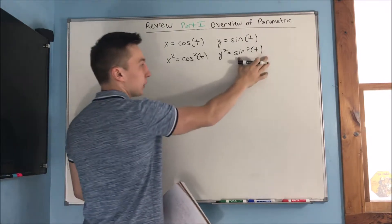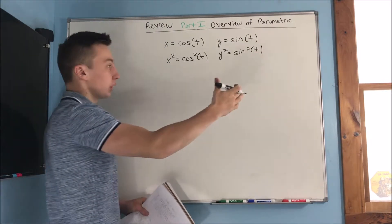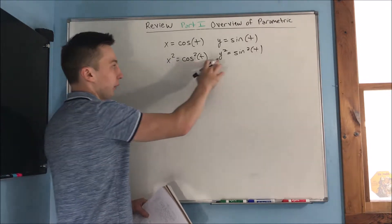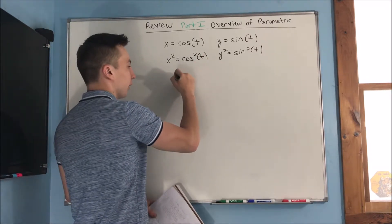And cosine squared plus sine squared is 1. So you can say that x squared plus y squared is going to equal 1.